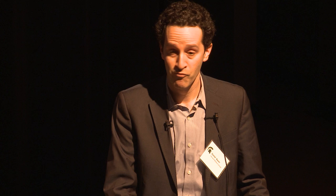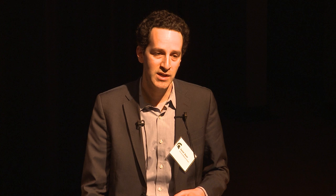The GWAS of fetal hemoglobin is somewhat an exception. The results were striking and reproducible across cohorts of various ethnic backgrounds. Just three loci contributed at least half the variation in fetal hemoglobin level: variants at the beta-globin cluster itself, the HBS1L-MYB locus implicated by familial studies, and a novel locus on chromosome 2, BCL11A, which really stood out. Work in the laboratory of my research mentor Stuart Orkin has unambiguously validated that BCL11A is a repressor of fetal hemoglobin.